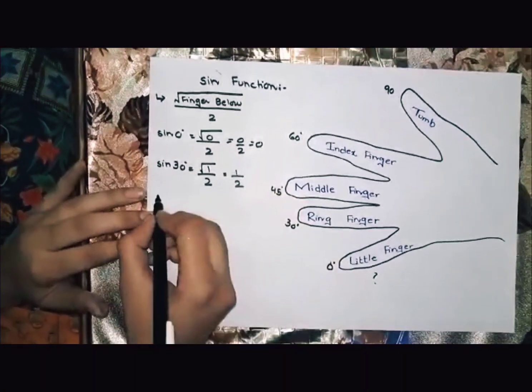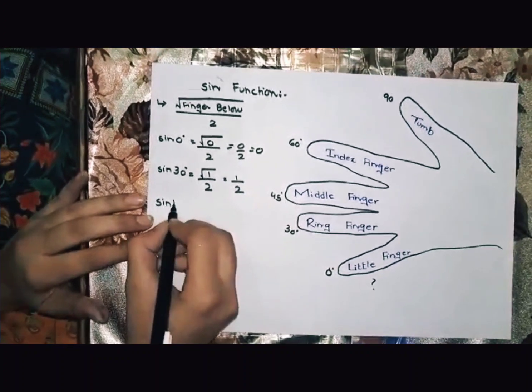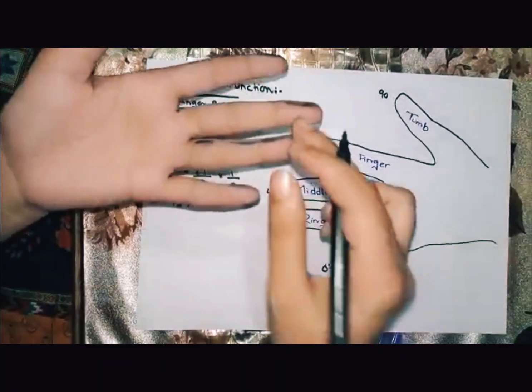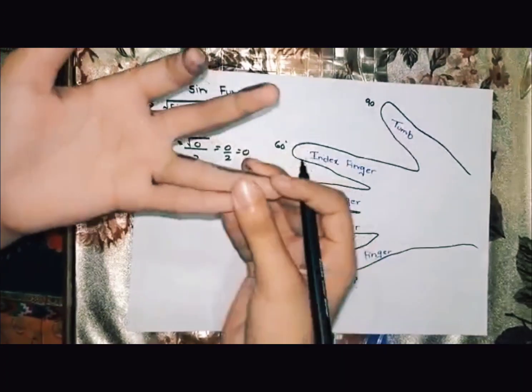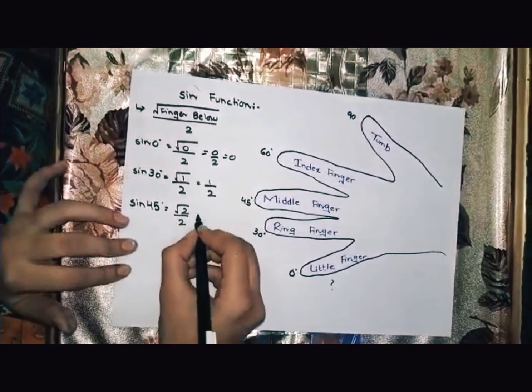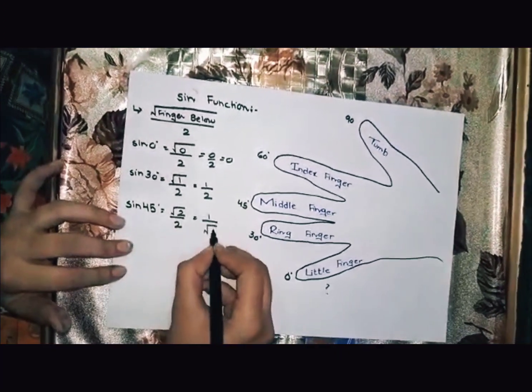Next we find sine 45. For sine 45, we have middle finger, and below we have two fingers. Under root 2 divided by 2, which is equal to 1 over under root 2.